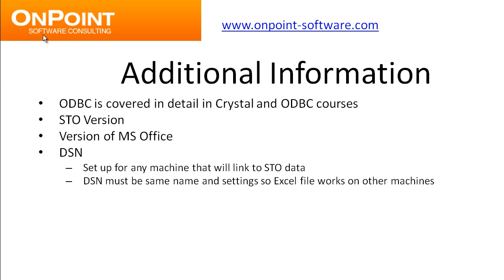DSNs — again, we used a DSN called 'free'. There's no magic to that word 'free', that's just what I chose to use. If you want to make this Access database available for other people, you'll have to set up that same DSN on those machines so they can link to the STO data. Those DSNs have to be the same name and have the same settings so that these files will work on the other machines.